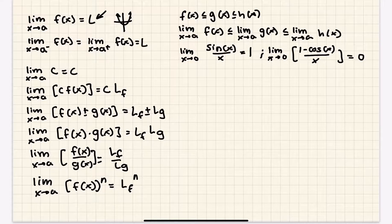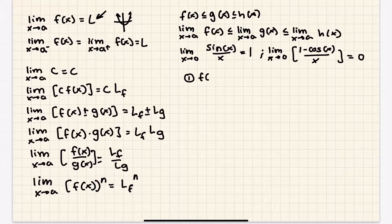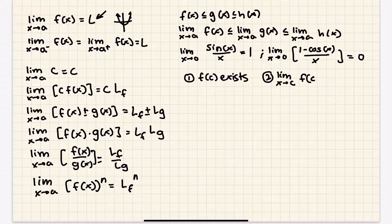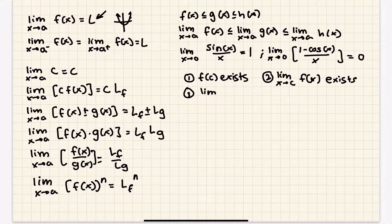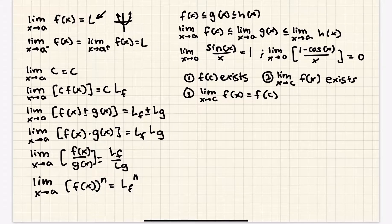The second major part of this unit is continuity. Continuity basically means that a graph can be drawn without lifting the pencil. There are three criteria you must check: first, the function exists at that point; second, the limit exists at that point — meaning the one-sided limits are equal; and third, the limit as x approaches c of f(x) equals the function value f(c). So the function exists, the limit exists, and they're both equal to each other.